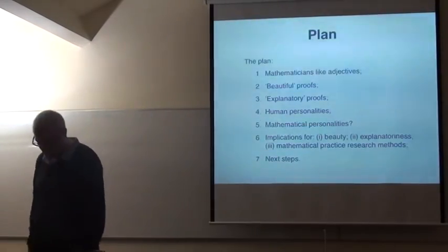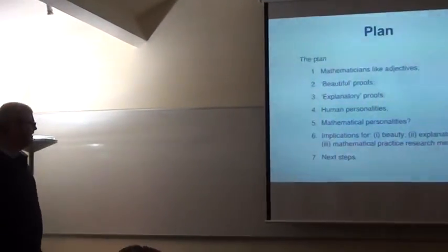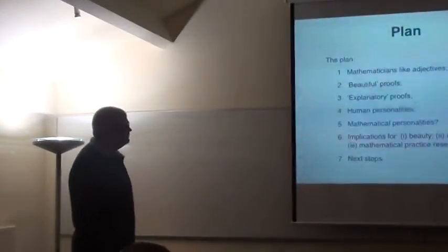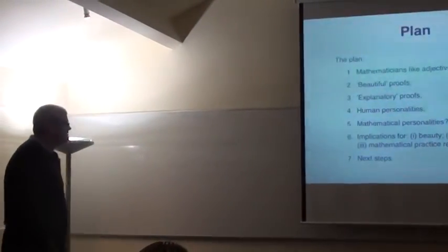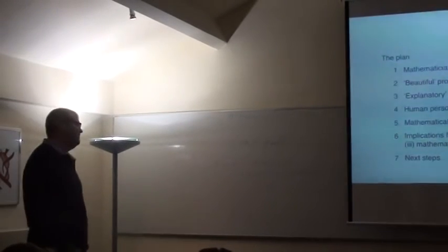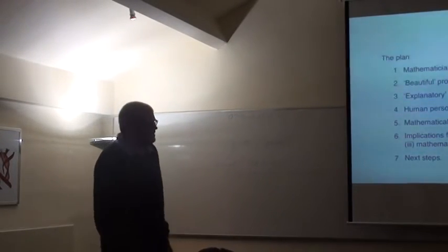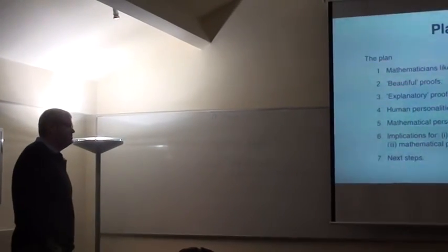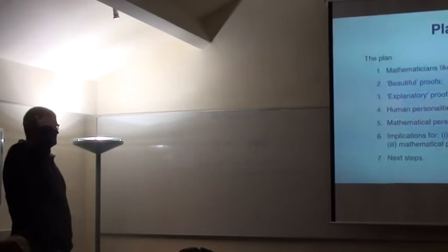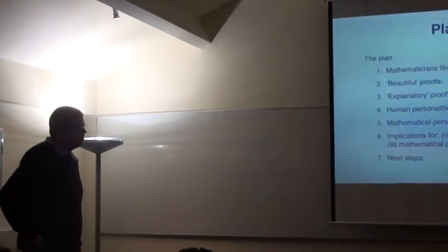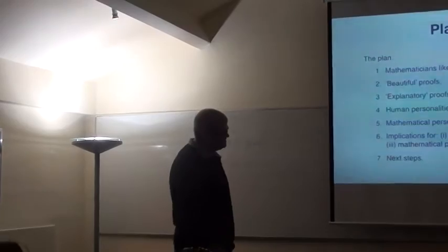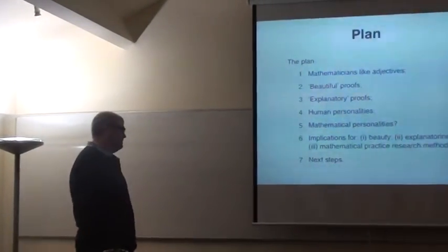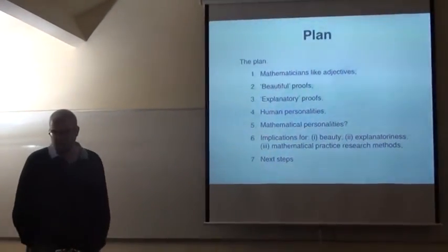Okay, so this is what I'm going to talk about today. It's my plan. I'm going to try, I don't think this will take very long to convince you that mathematicians love adjectives, they're always using adjectives. Two adjectives that are typically often used are beautiful and explanatory. I'm going to talk a bit about that, then I'm going to draw an analogy with human personalities, and then I am going to present an empirical study that Andrew and I did about mathematical personalities, draw out some implications for you, and then talk about where this could go next.